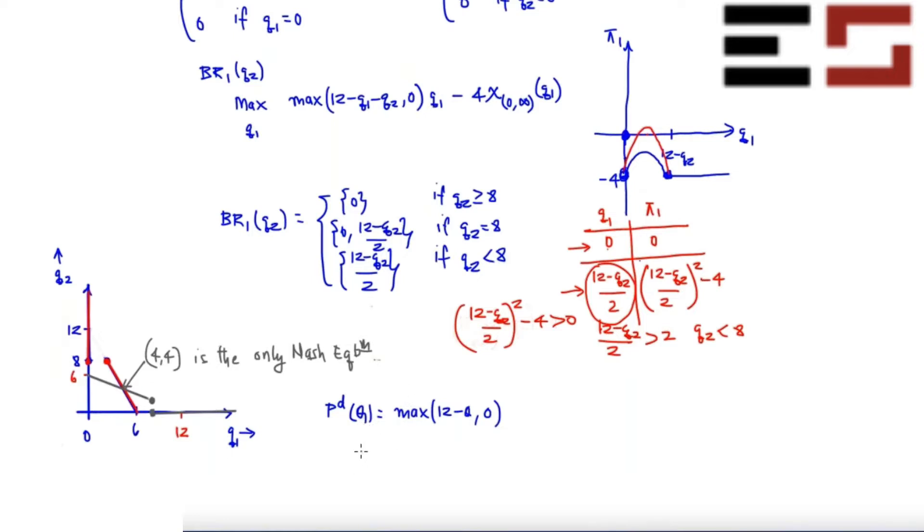And the cost function is, let's say C1(Q1) is 16, so now increase the fixed cost, if Q1 is positive, and zero if Q1 is zero. And then C2(Q2) is also 16 if Q2 is positive, and zero if Q2 is zero.